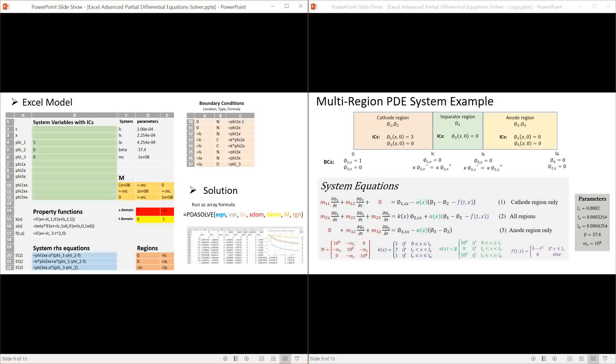It's important that the variables are passed to the solver in this exact order. I've also assigned initial conditions for phi1, 2 and 3. Here we have constant initial conditions but in general they can be any function of x. I've also named cells D2 to D6 as LC, LS, LA, beta and MC for the system parameters and defined their numerical values.